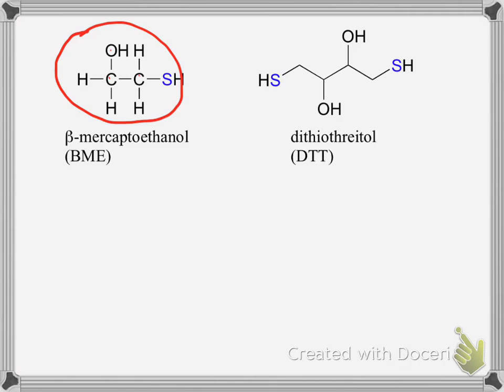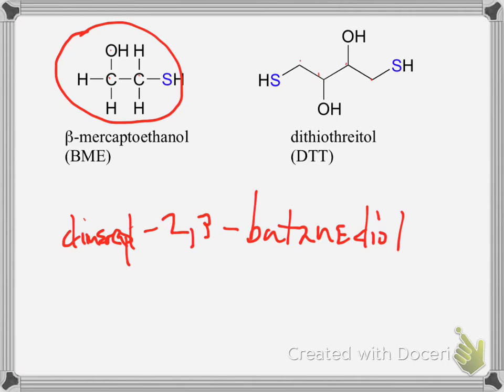And then we have DTT, dithiothreitol, which, if we were going to name this according to IUPAC standards, we would have one, two, three, four. So, there's butane, diol, hanging off of carbons two and three. And then we would have dimercapto. One, four. So, 1,4-dimercapto-2,3-butanediol. More commonly called dithiothreitol, or DTT.